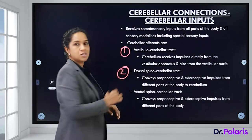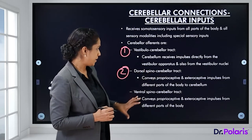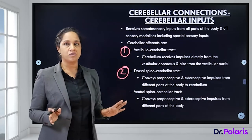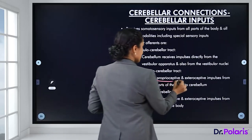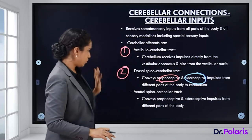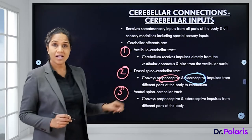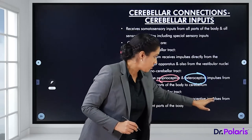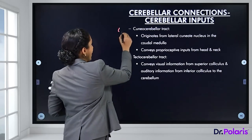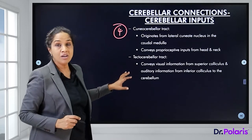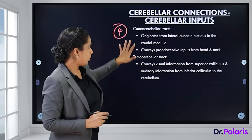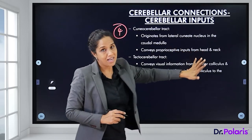The second afferent is the dorsal spinocerebellar tract, which conveys proprioceptive and exteroceptive impulses from different parts of the body to the cerebellum. The third is the ventral spinocerebellar tract, which also conveys proprioceptive and exteroceptive impulses from different parts of the body.